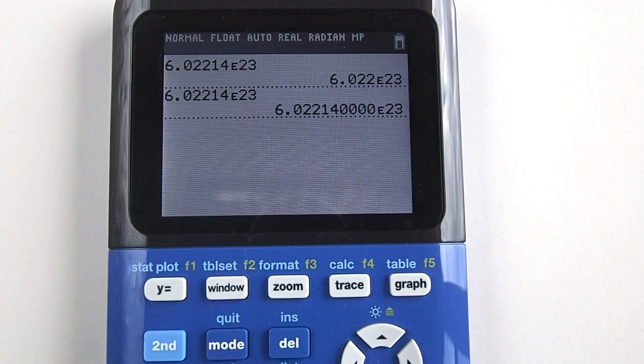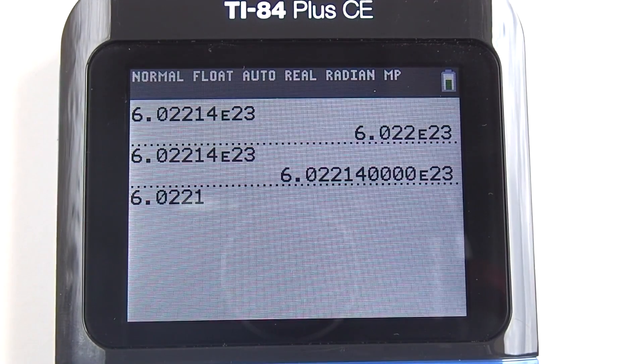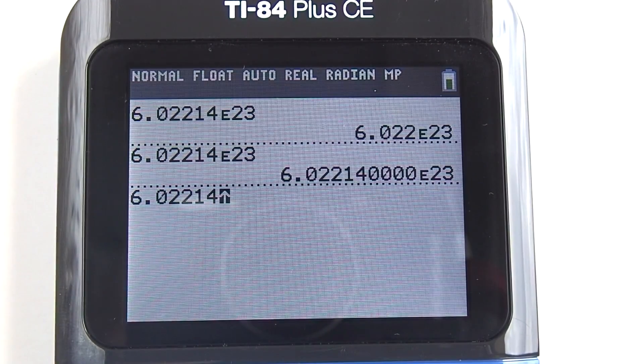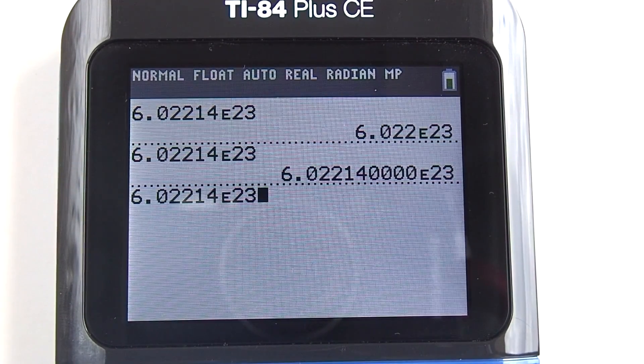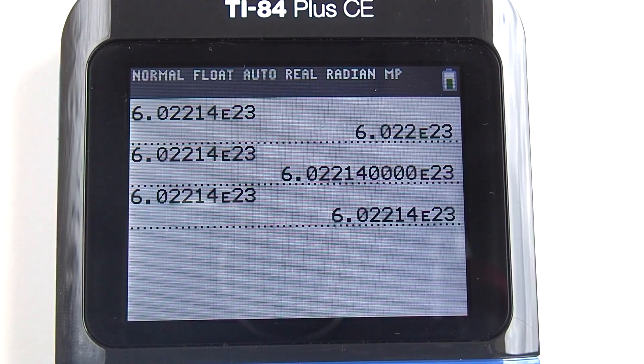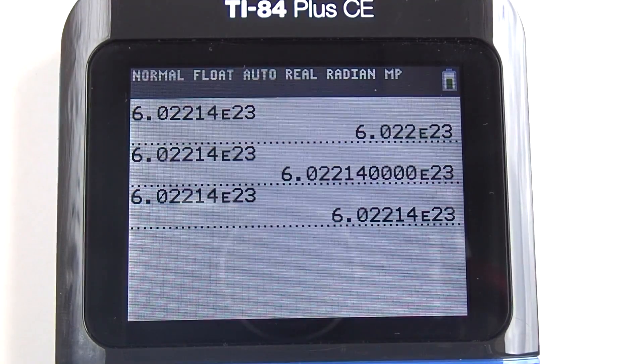Re-enter our scientific notation, 6.02214 second comma 23. Now press enter. So if we do not enter a specific float number, the calculator will display the number of decimals to our original number.